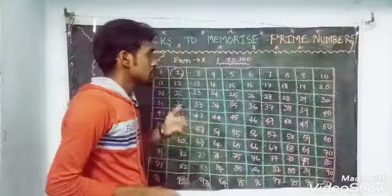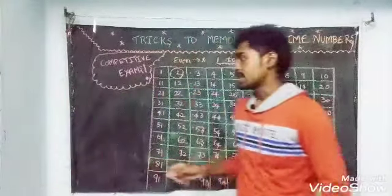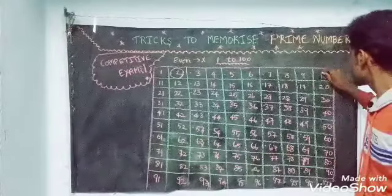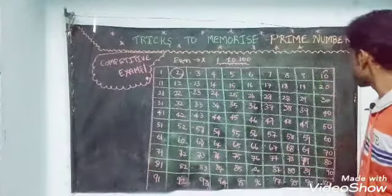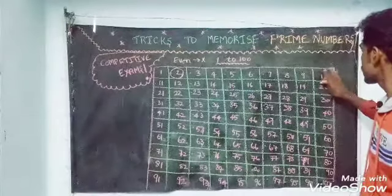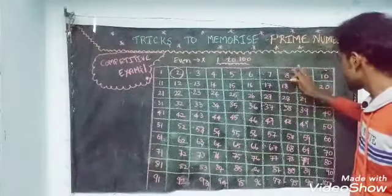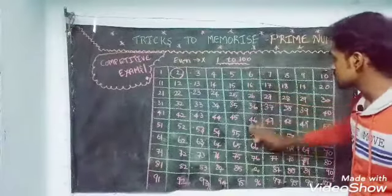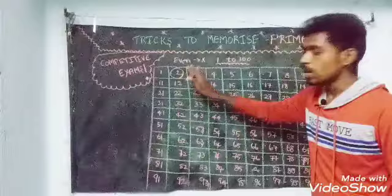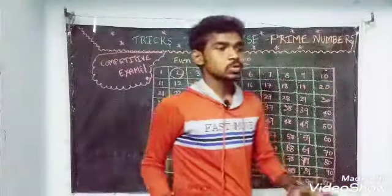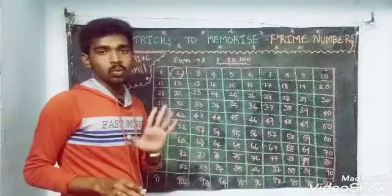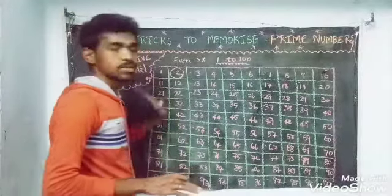If you look at the prime numbers: 4 is not prime, 6 is not prime — only 2 is a prime number among even numbers. Only 2 is a prime number. Only 1 even prime number, and that is 2.